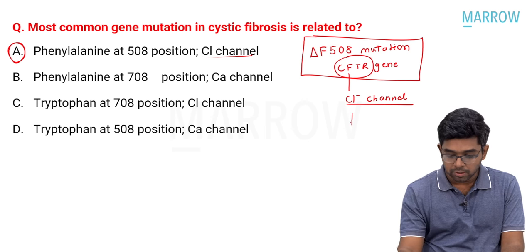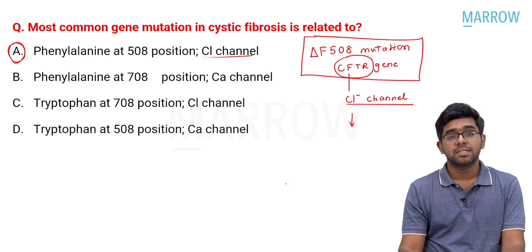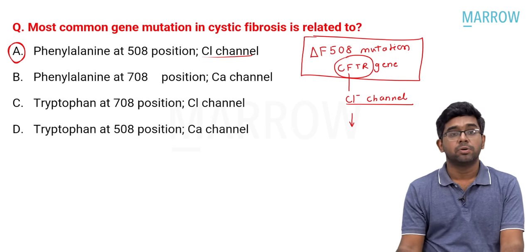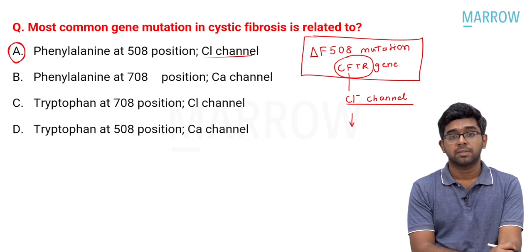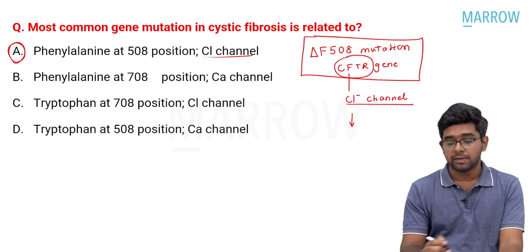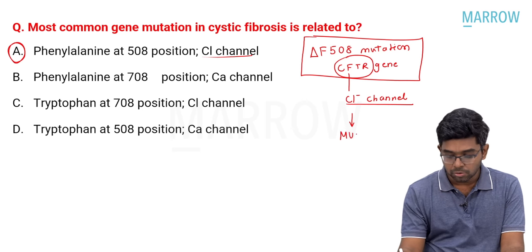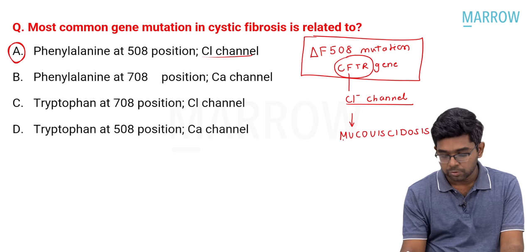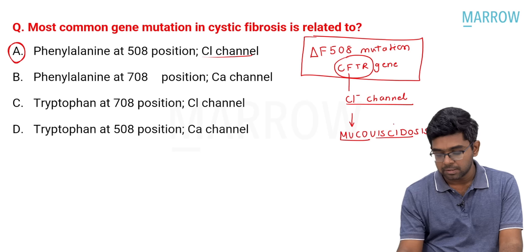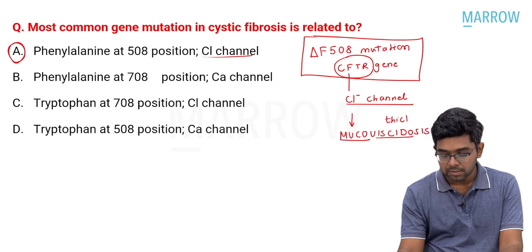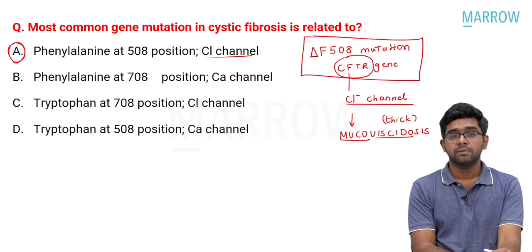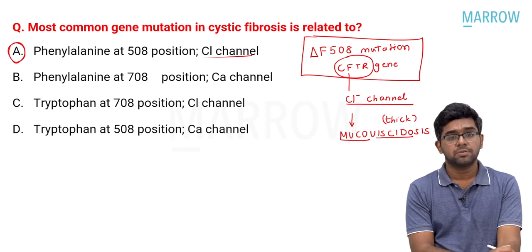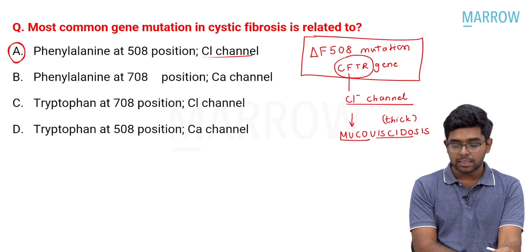Because of the delta F508 mutation, the CFTR — a chloride conductance channel — becomes dysfunctional. This is the most important abnormality in cystic fibrosis. Due to this dysfunctional chloride channel, all secretions become thick — mucus secretion, intestinal secretion, all secretions. That is why this condition is referred to as mucoviscidosis — muco meaning mucus, viscid meaning thick. The answer is straightforward: option A.